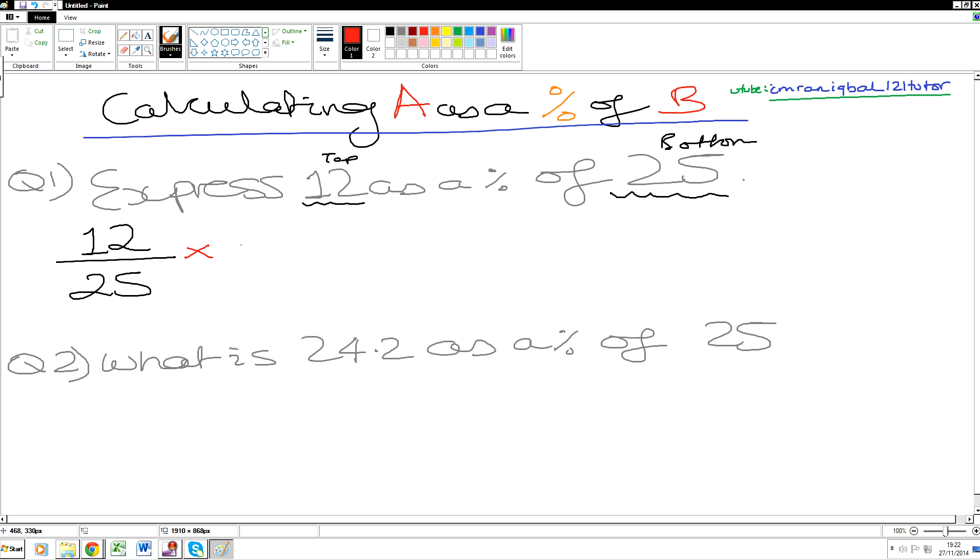100. To change a fraction into a percentage we can times by 100 as one of the methods, or we could use an equivalent technique as another method. There are lots of methods, but we're going to just times it by 100 over 1 using an old-school traditional method.